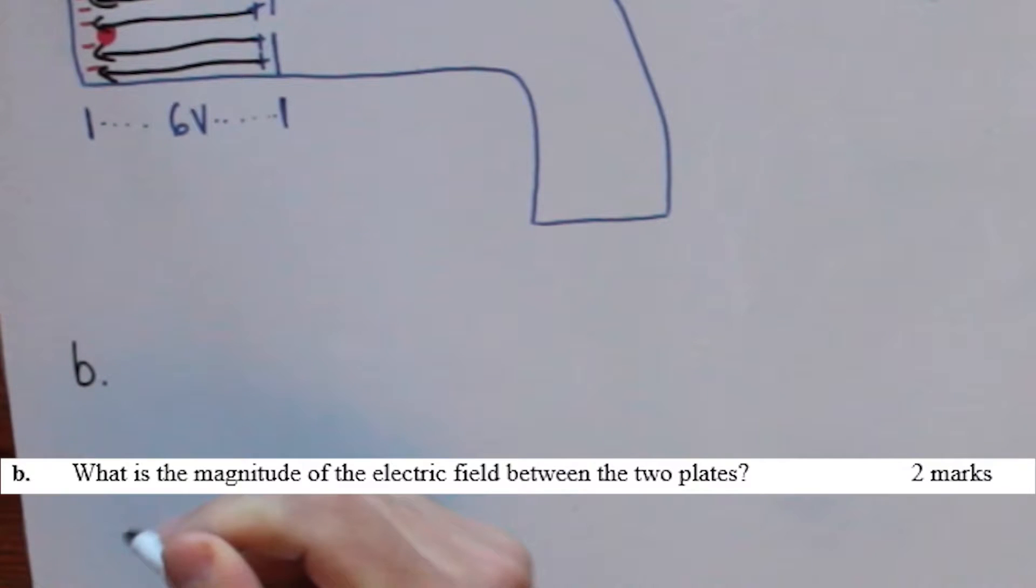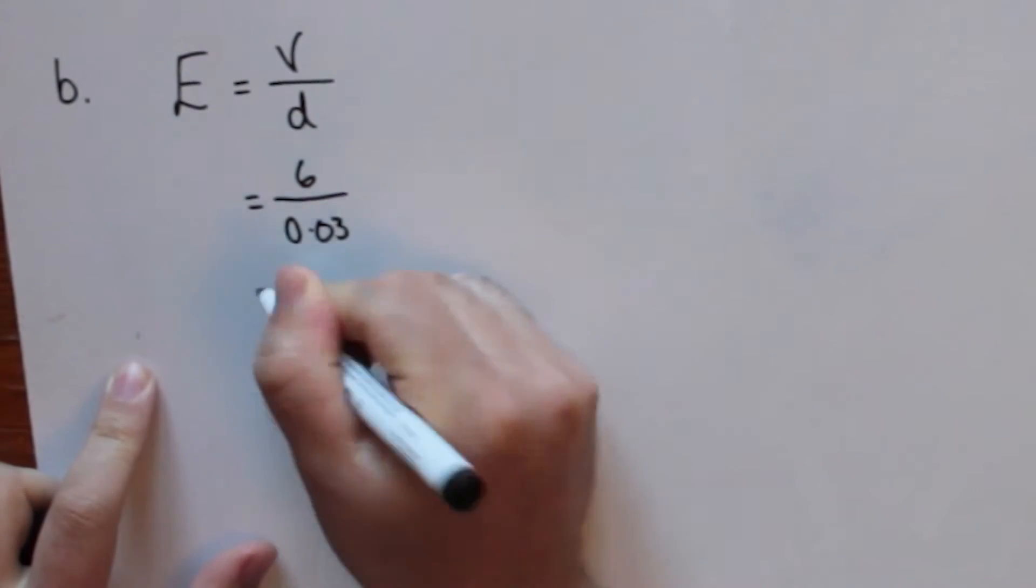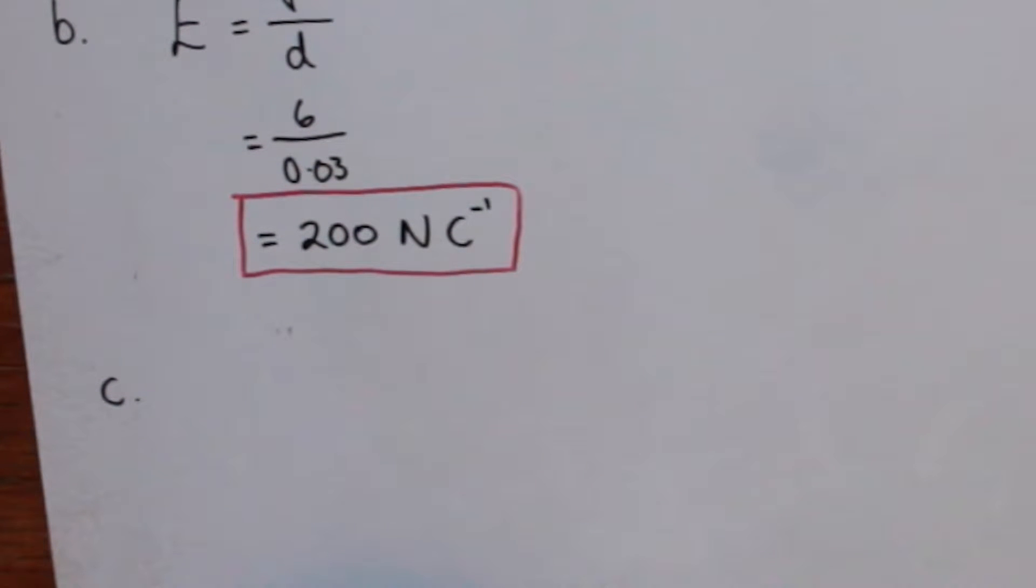Part B, what is the magnitude of the electric field between the two plates? The magnitude of the field is given by the voltage divided by the distance between the plates. So 6 over 0.03 is 200 newtons per coulomb.